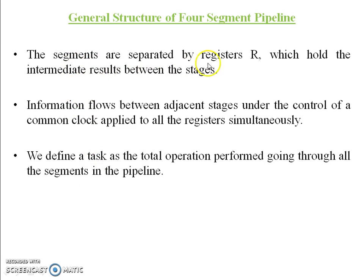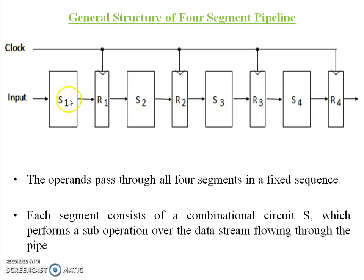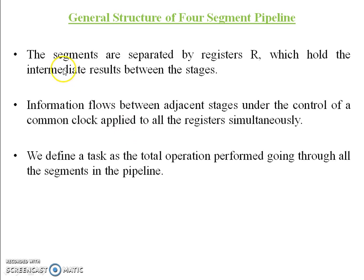The segments are separated by register R. The first segment processes data stored in register 1, the second segment processes data stored in register 2. The segments are separated by registers R which hold the intermediate results between the stages. Information flows between adjacent stages under the control of a common clock applied to all the registers simultaneously. We define a task as the total operation performed going through all the segments in the pipeline.